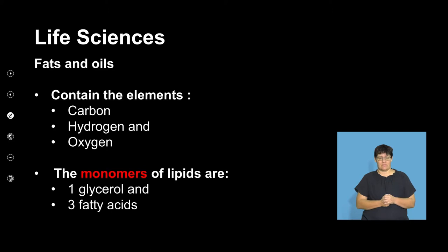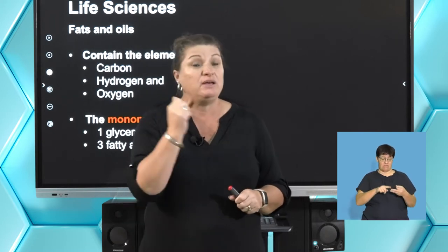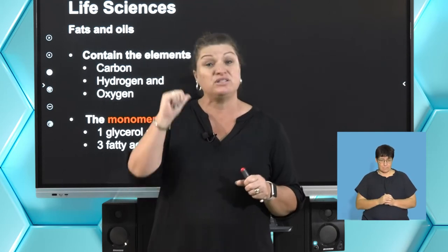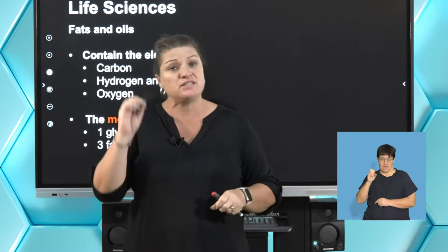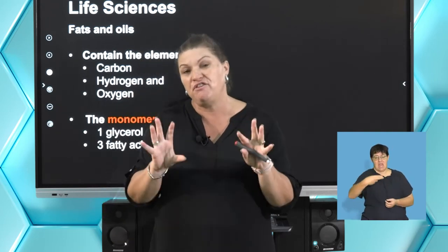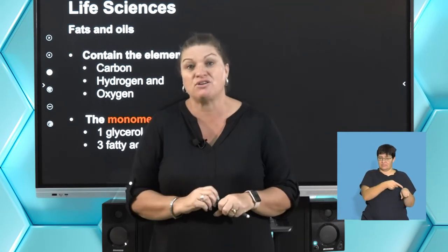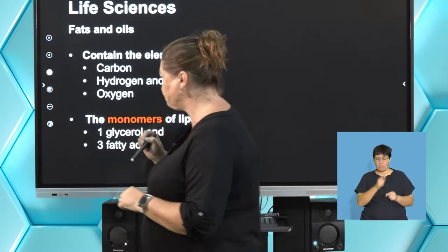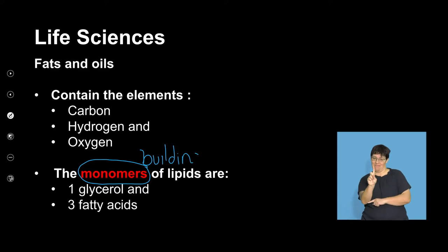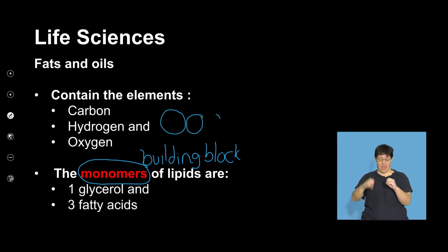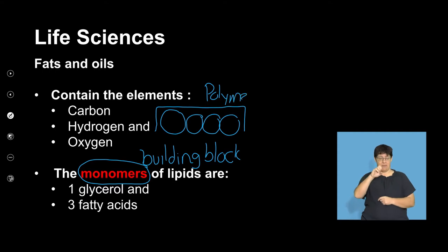Let's look at what a fat is made of. When we look at carbohydrates, we saw they're made up of carbon, hydrogen, and oxygen. When we looked at proteins, we had carbon, hydrogen, oxygen, and then nitrogen. Fats have carbon, hydrogen, and oxygen — so they have very similar elements to carbohydrates. Remember we're looking at this concept of what a monomer is: a monomer is a building block, one single unit. We take one building block, add them together again and again, and we make one big polymer — one big macromolecule.